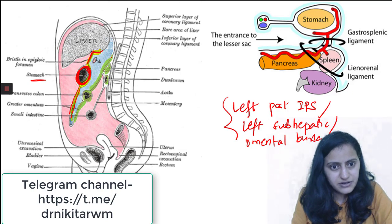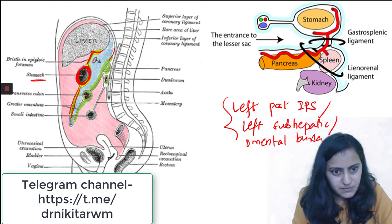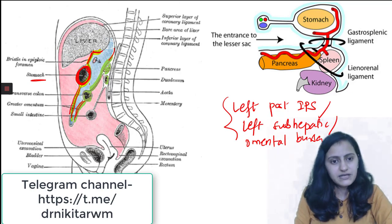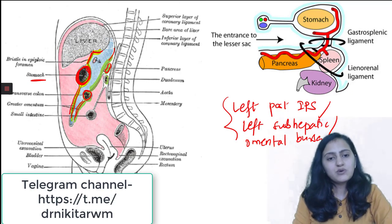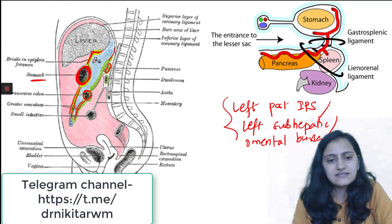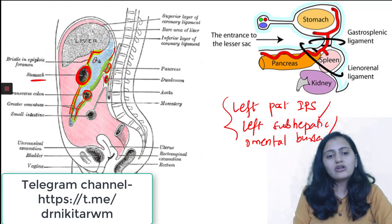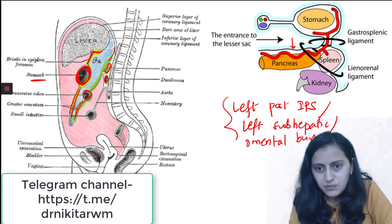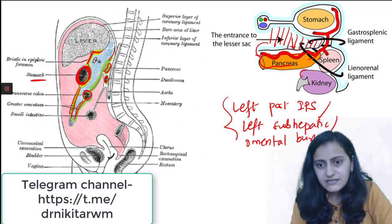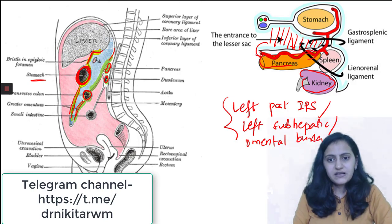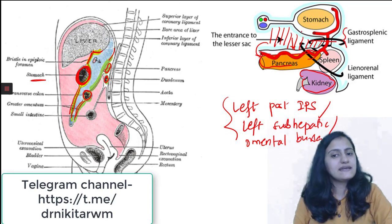The posterior relations are highlighted in green. You can see the posterior two layers of the greater omentum, the transverse colon and transverse mesocolon, and the pancreas. Whatever is in the stomach bed forms the posterior relations of the lesser sac. You can also see the duodenum. Additionally, posteriorly you have the kidney and the splenic artery in close relation to the pancreas.